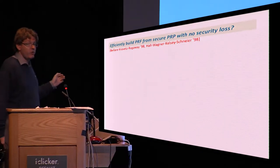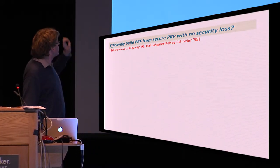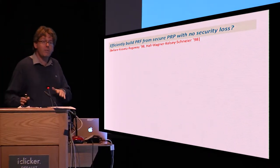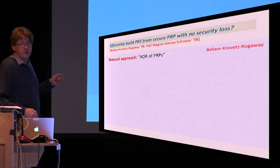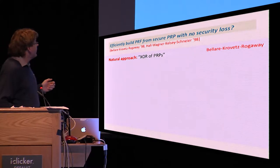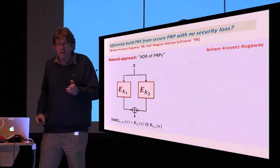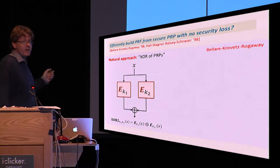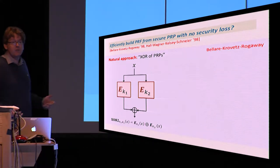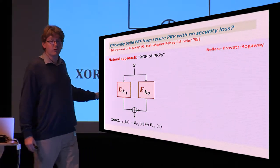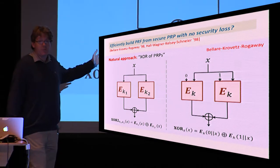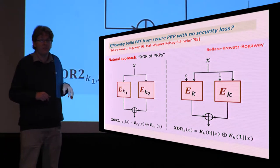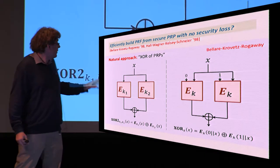A question that was asked for the first time by two timely close works by Bellare, Krovetz, Rogaway, and Hall, Wagner, Kelsey, and Schneier in 1998, is whether one can find transformations that transform PRPs into PRFs while preserving security. The very neat construction that was first suggested by Bellare et al. in their paper without a proof is the XOR of PRPs. The idea here is that we obtain a PRF which depends on two block cipher keys, and to evaluate it on input X, we evaluate the block cipher on the two keys on the same input X and XOR the outputs. I refer to this construction as XOR2 because of its two-key nature. You can easily obtain a one-key version by losing one bit of input length and prepending a zero or a one to the input and invoking the block cipher on these two inputs and XORing the output. We call this one the XOR construction.